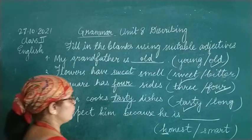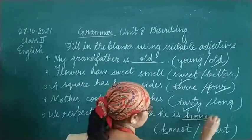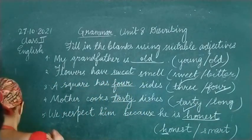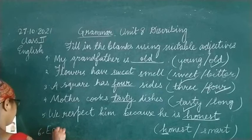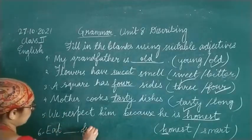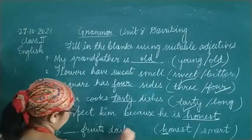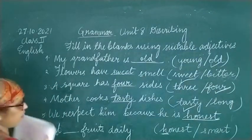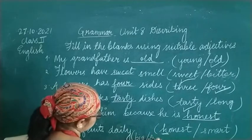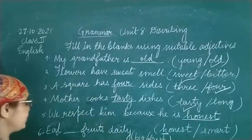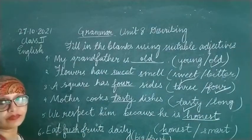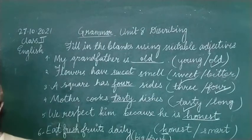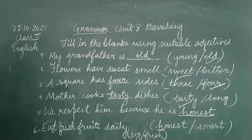We respect him because he is honest. Number 6: Eat blank fruits daily. The options are big or fresh. We should eat fresh — F-R-E-S-H — fruits daily. That completes exercise number 5. Now we will move on to exercise 6, and then exercise 7.